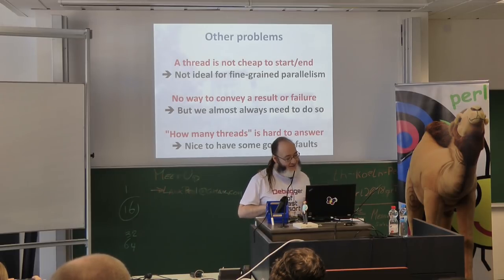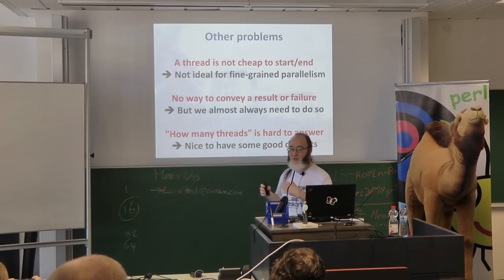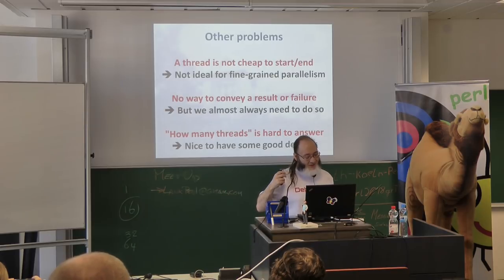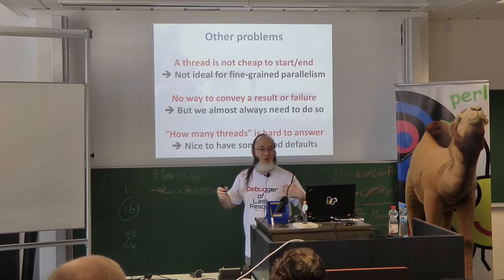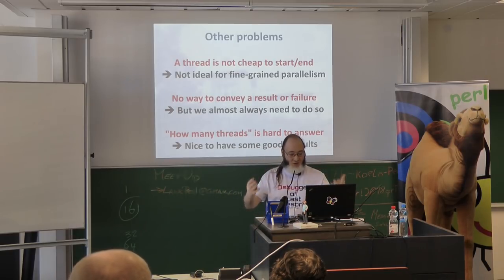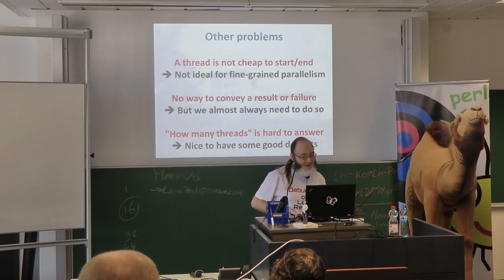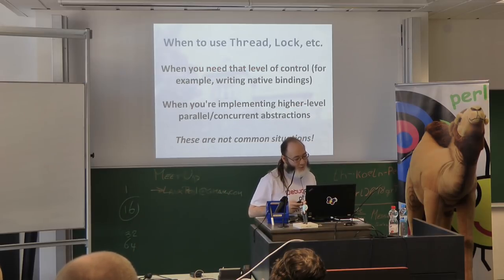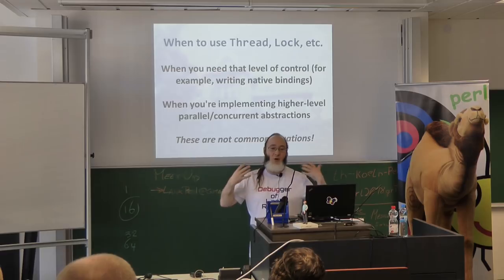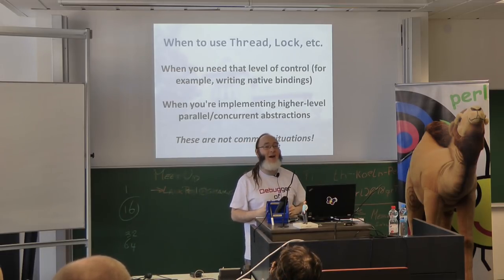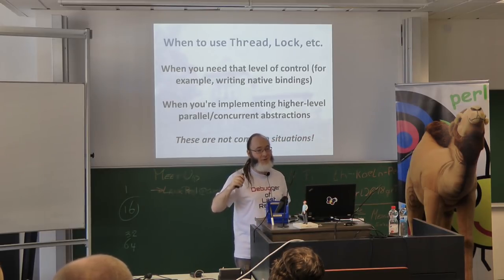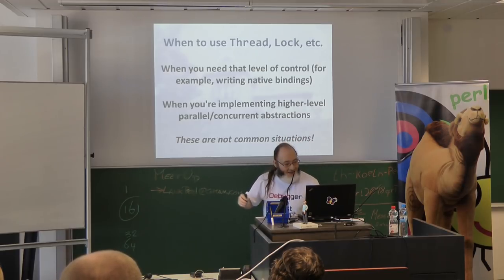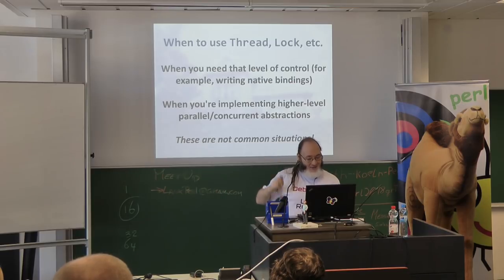Even putting that aside, working at this level is kind of tricky. A thread is not cheap to start or end, so if you want fine-grained parallelism, this is costly. Getting a result back to the thing that started the work requires you to invent that mechanism yourself. Answering how many threads you should have is a very hard question — it depends on the problem, the machine, memory, all sorts of things. So when should you work at this level? When you really, really have to. I've very rarely done this. Even something complex like Crow doesn't use this directly anywhere — we build it entirely in terms of higher-level constructs. I've used this when writing native bindings, like async bindings for libSSH and OpenSSL.